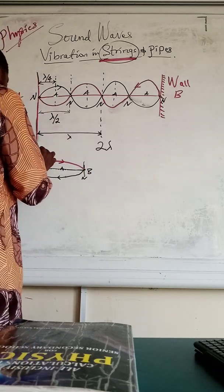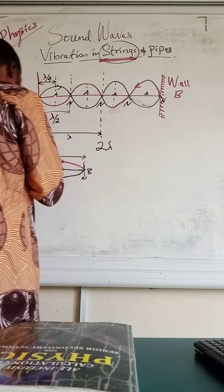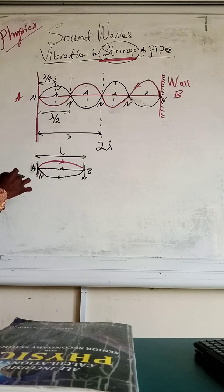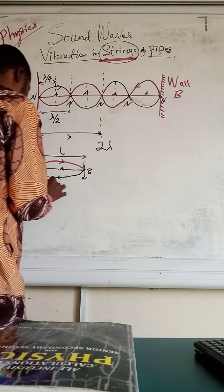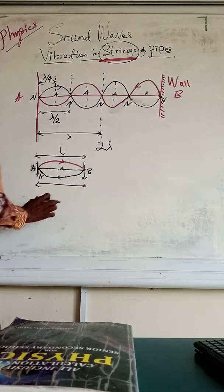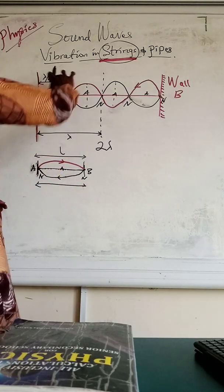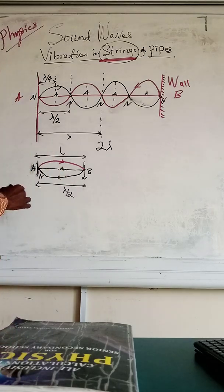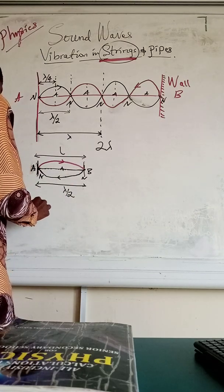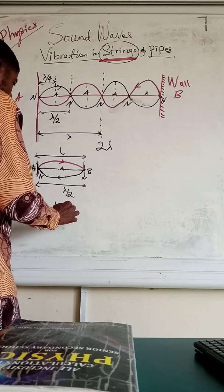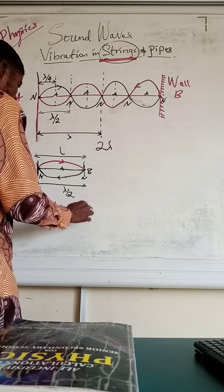From here to here is the length L of this guitar string. From here to here is the wavelength. Because this wavelength represents one loop, we say this wavelength is equivalent to one half. So physically, we can say that L equals lambda over 2. Call this your equation star.